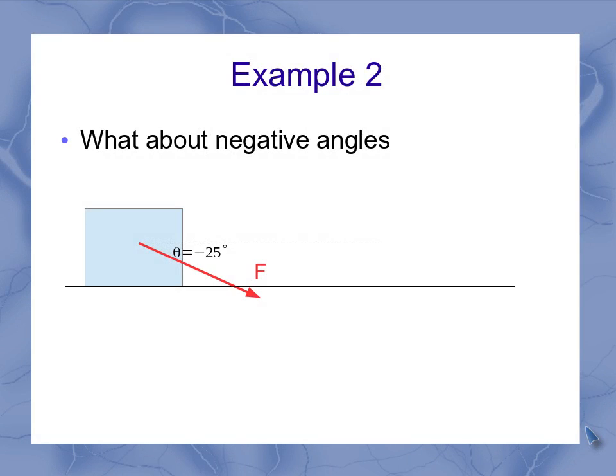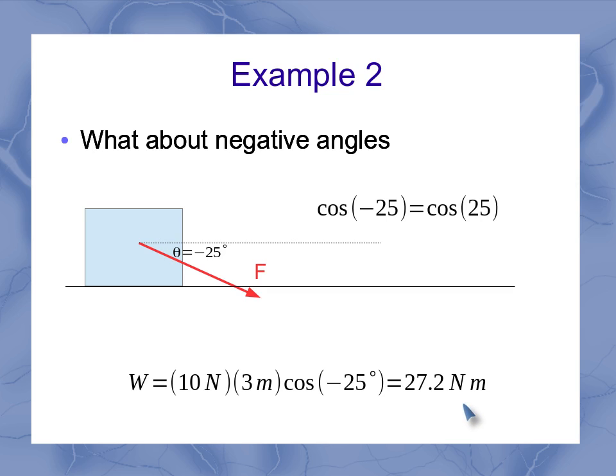So what if I had a negative angle instead? So rather than pulling up above the horizontal, I'm pulling slightly down below the horizontal. Well, if I plug that into my equation with the negative 25 in there, I still get the same value of 27.2 newton meters. And that's because, in general, the cosine of minus 25 equals the cosine of 25. Because cosine is a symmetric function. Anytime you have a negative angle, you get the same value as if you had the positive angle.